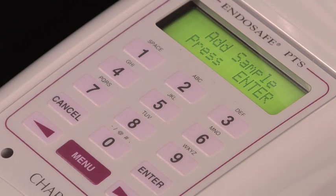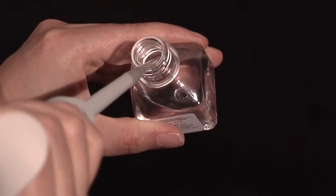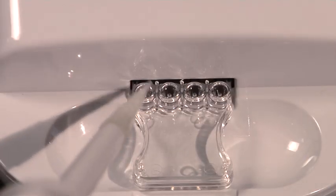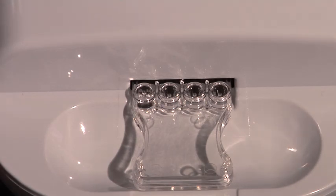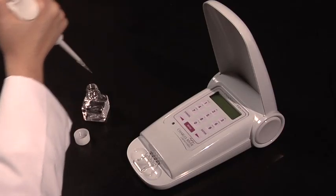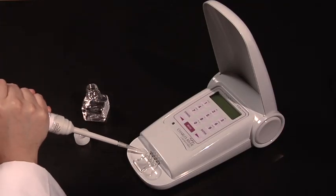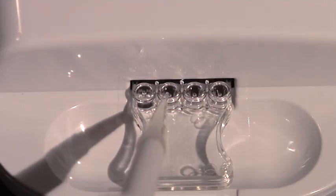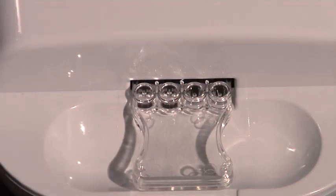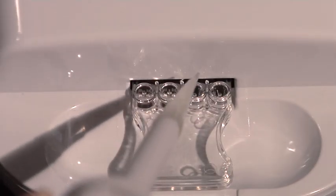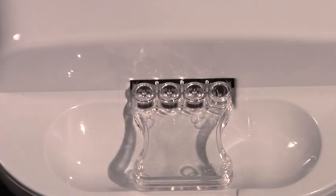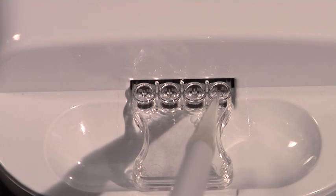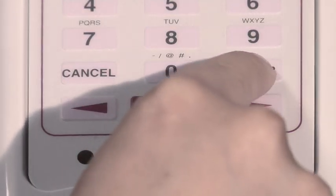After entering your information, the PTS reader displays Add Sample. Carefully pipette 25 microliters of sample into all four sample reservoirs of the inserted cartridge. To do so, hold the pipette so that the tip is at an angle and not completely at the bottom of the sample reservoir. After you have accurately determined each of the four sample reservoirs has 25 microliters, press Enter on the keypad.